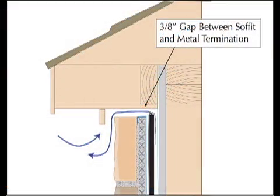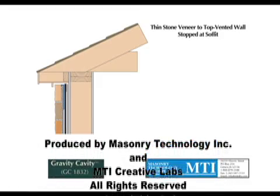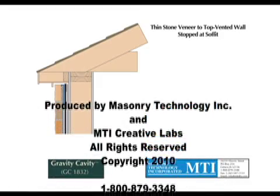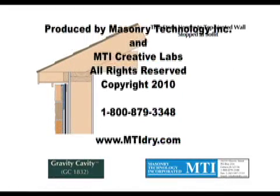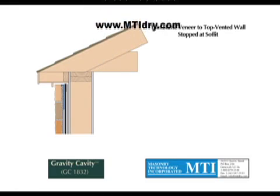This illustration shows how air flows out of the top of the Gravity Cavity and out of the drainage cavity. Thank you for viewing this Gravity Cavity Installation Guide. For additional information, please contact Masonry Technology at 800-879-3348.